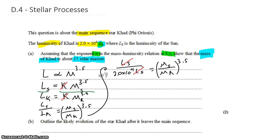The last thing we're going to do is take the 3.5 root of both sides so that we can solve for the mass of CAD. So that's going to be 1 on the 3.5 root of 2 times 10 to the 4th equals ms on mk. Solving for the mass of CAD, that's going to be the 3.5 root of 2 times 10 to the 4th times the mass of the sun.